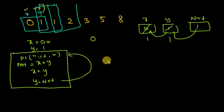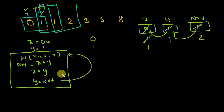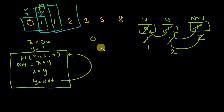We need to loop back to repeat these steps. Going back and printing X gives 1. Again, X plus Y is 1 plus 1 equals 2, stored in next. Y's value (1) is stored in X, and next (2) is stored in Y. Going back and printing X gives 1.